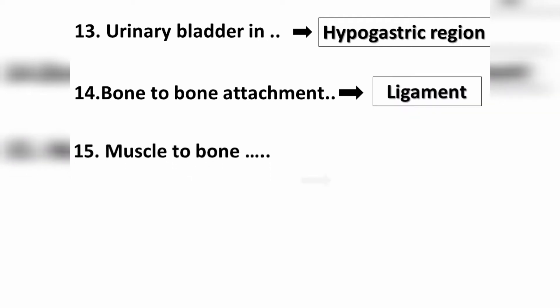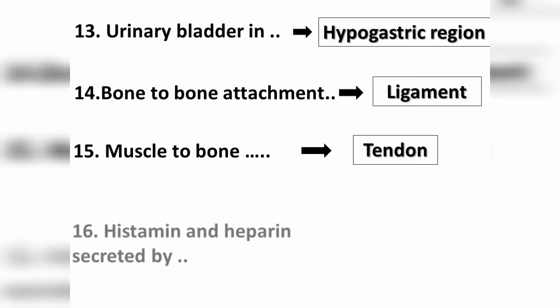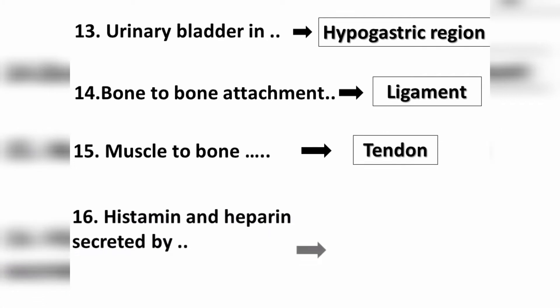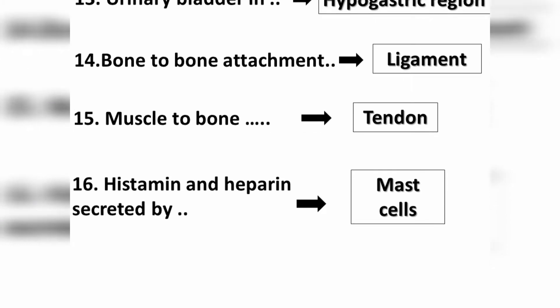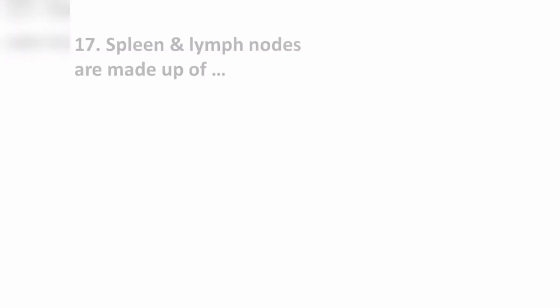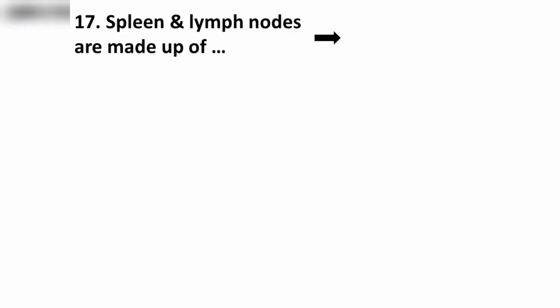Question number fifteen: muscle-to-bone attachment is called a tendon. Question number sixteen: histamine and heparin are secreted by mast cells. Question number seventeen: the spleen and lymph nodes are made up of reticular fibers.